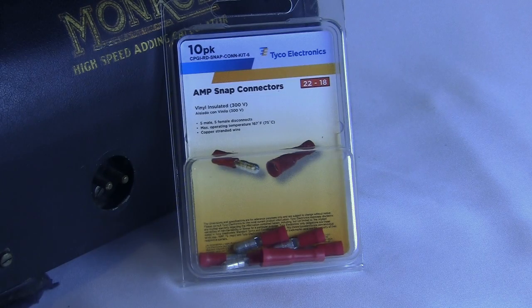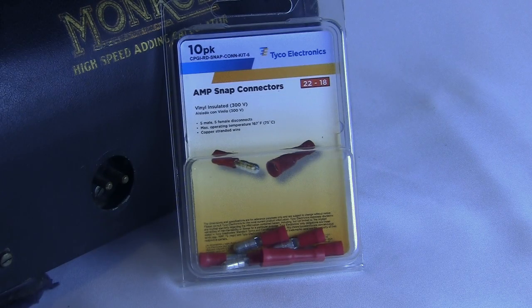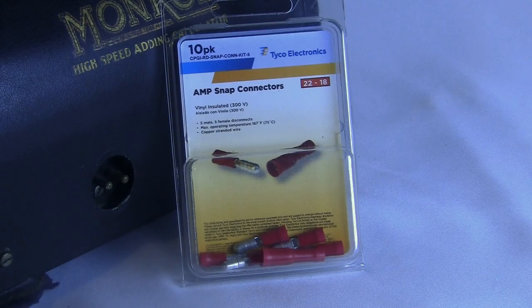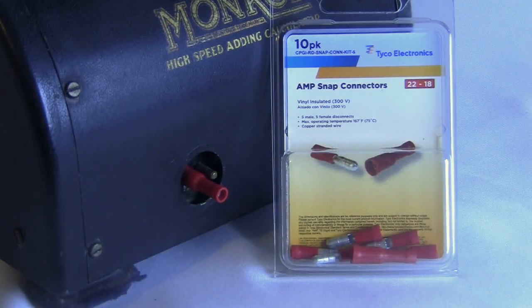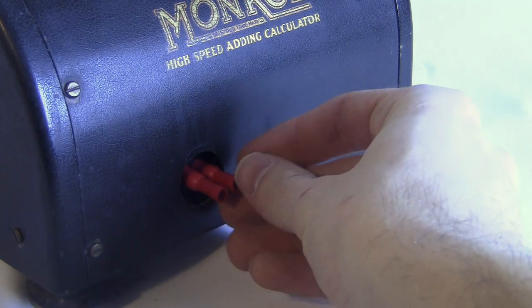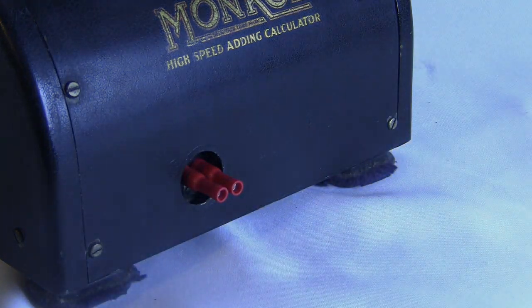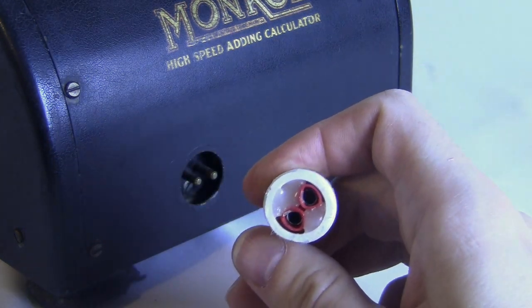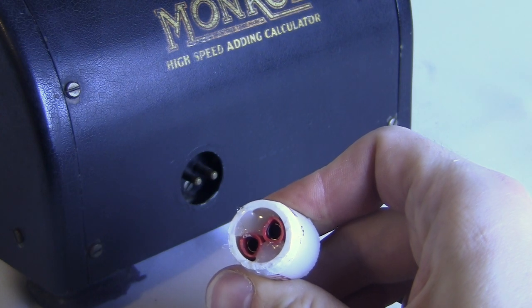So I got some snap-in wire connectors that look like this. The female end was just slightly too big for the pegs in the machine, but I just squeezed it a little with some pliers, and it got it to fit perfectly. Then I got a little piece of PVC pipe and put the connectors in there and filled the whole thing with hot glue.